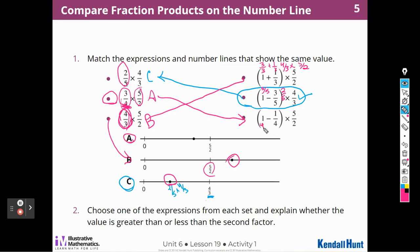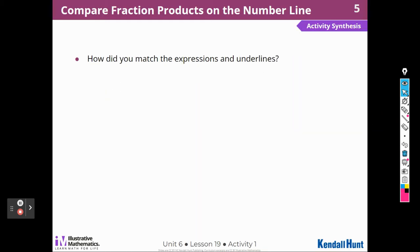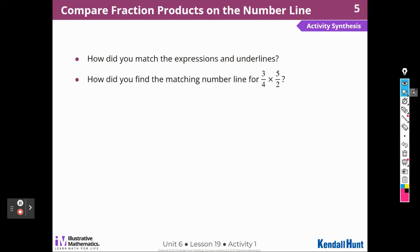And I'm going to think of this one as four over four minus one-fourth, which is going to be three-fourths times five-halves. How did you match the expressions and the number lines? I looked at the numbers and saw which ones were greater than or less than one. How did you find the matching number line for three-fourths times five-halves? I looked for an expression with five-halves, and then only one of them had another factor with a value of three-fourths.